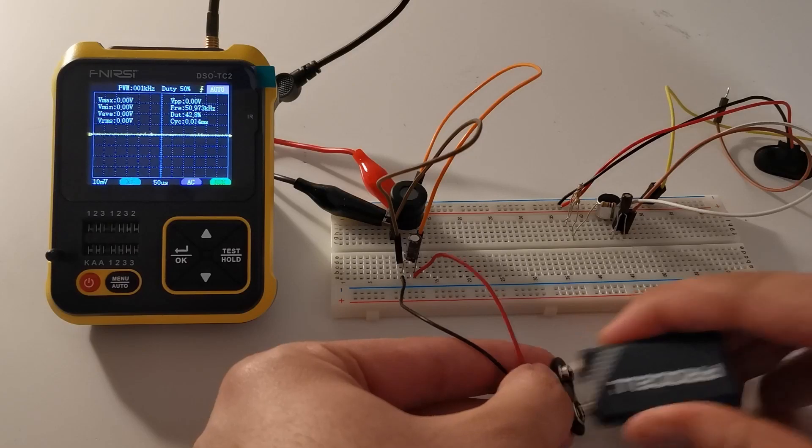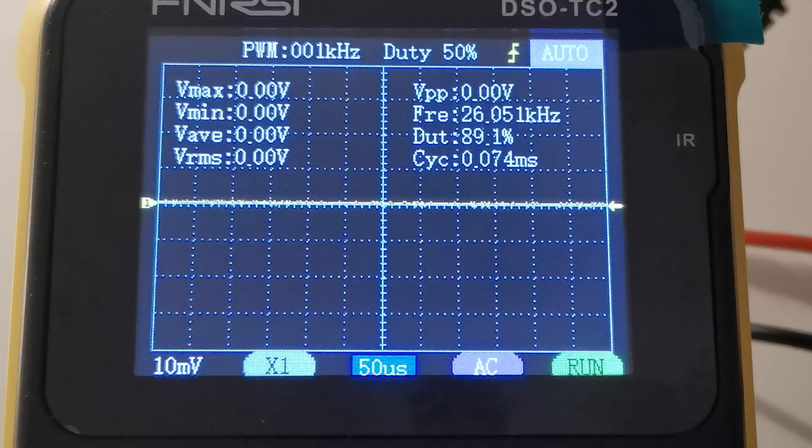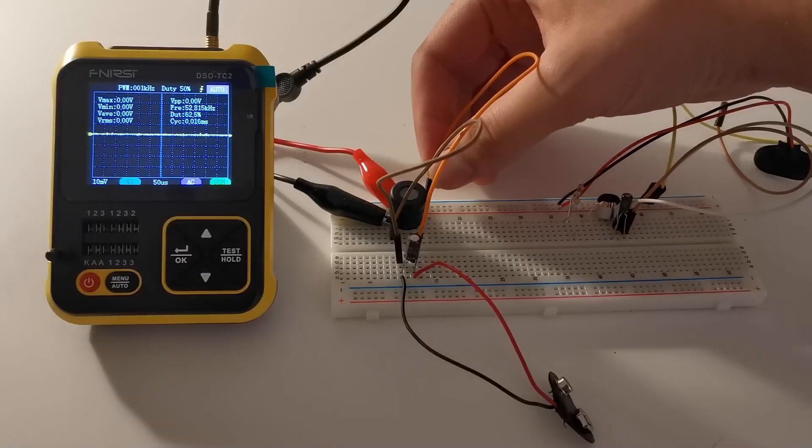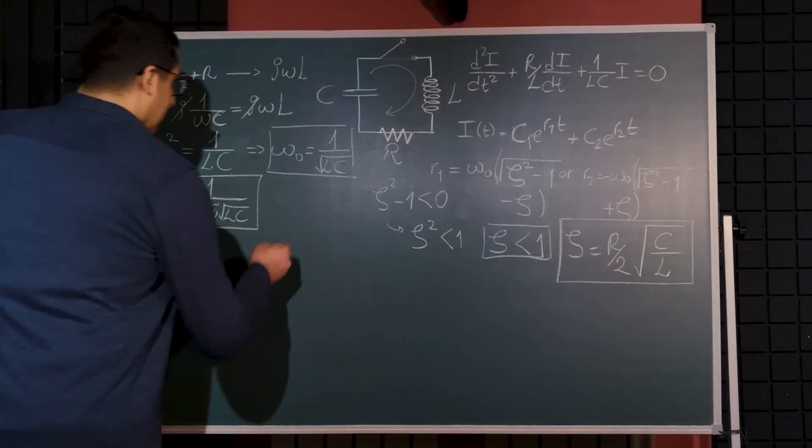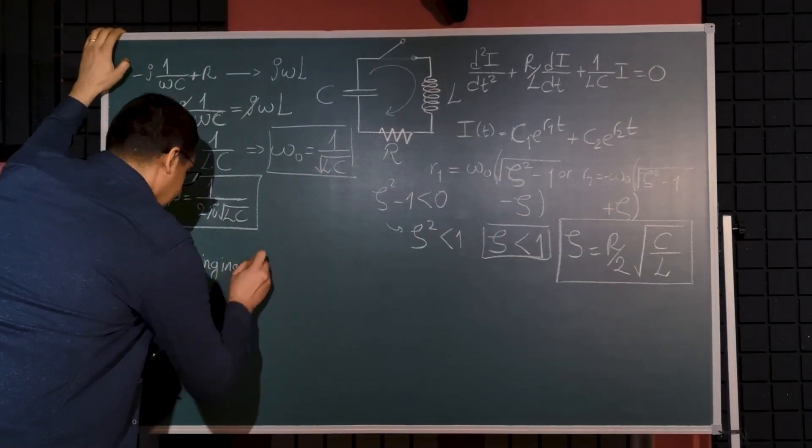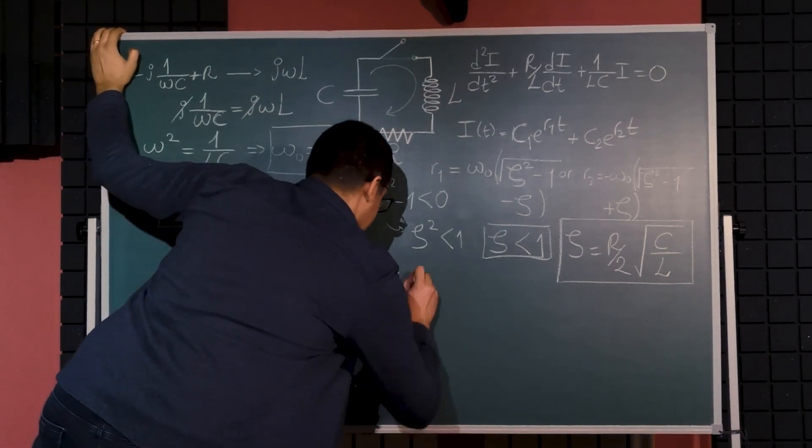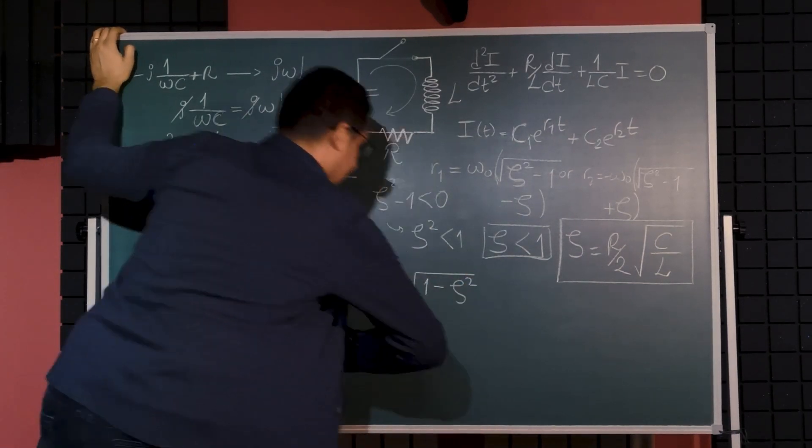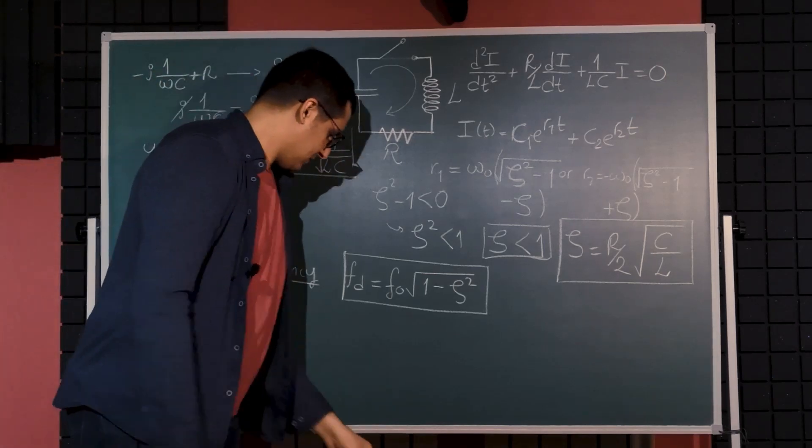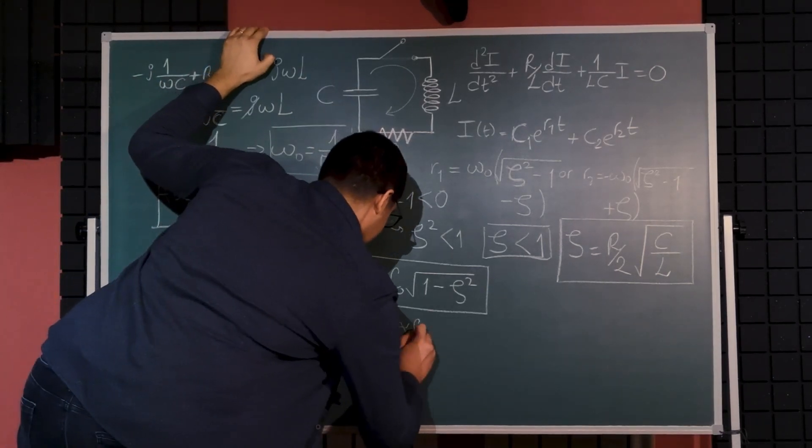Since the ringing frequency is ω₀ times square root of 1 minus the square of the damping constant, in that case it is almost equal to the natural frequency. When we calculate it happens to be around 7.3 kilohertz that our oscilloscope is capable of screening but impossible to catch manually.